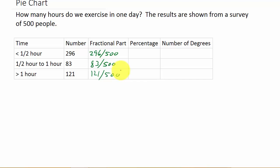Now to get the percentage. The percentage is just for under half an hour, it's just the 296 divided by 500. That gives us the percentage of people that exercise less than half an hour. So 296 divided by 500, that gives us .592. But remember, you move it two places to the right to convert a decimal to a percent, so that's 59.2%.